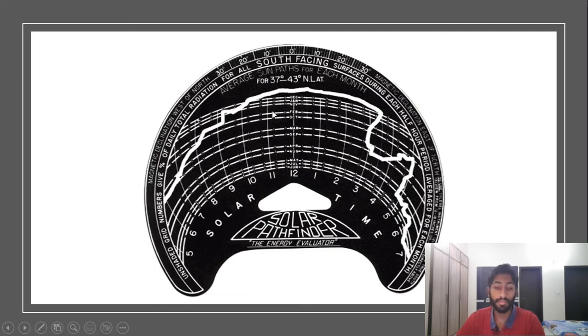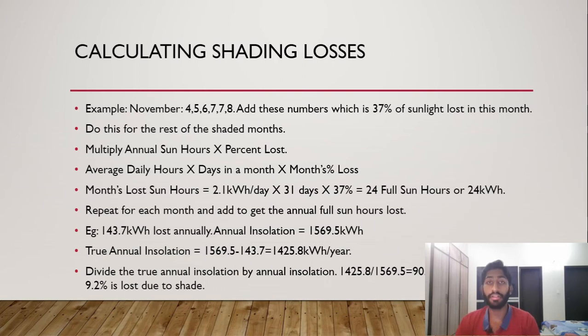So for example, if there's shading that you trace, you place in your location, this is the line that you're getting, and you trace it. And based on that, you have to then determine how many hours of shade is lost per month based on the shading here. So for example, to calculate shading, let's say November, the numbers 4, 5, 6, 7, 7, 8 that you shade, and then you see the numbers associated alongside to add up to 37% of sunlight lost in that month November.